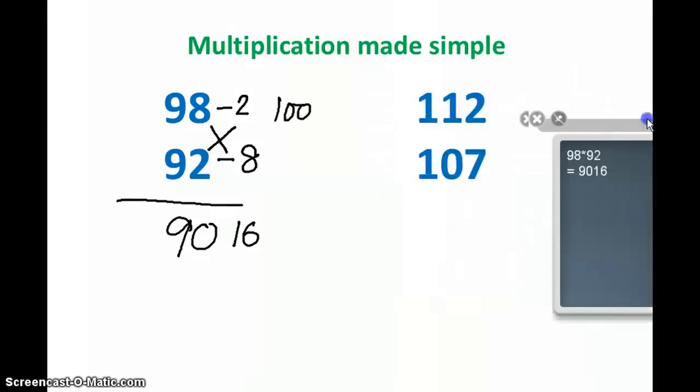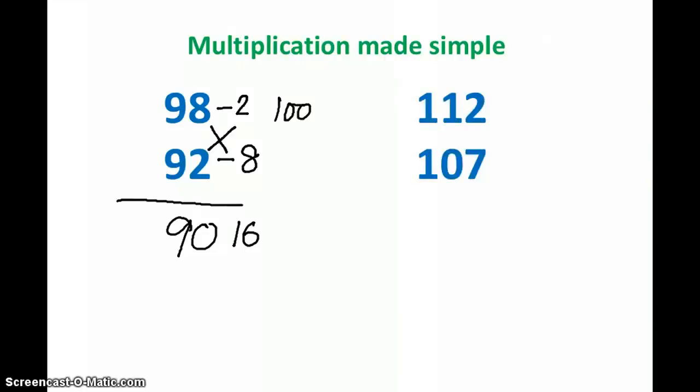Let's check one more example: 112 into 107. Here we should see that both the numbers are more than 100. Base is 100, but both numbers are more than 100, so I can write how much more this is. This is plus 12 and the next number is plus 7. 107 is 7 more than 100. Now we need to multiply both the numbers, 12 into 7, which gives me the number 84.